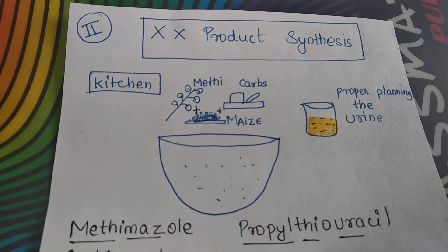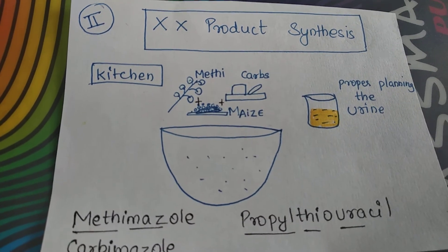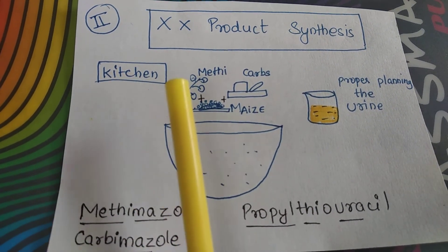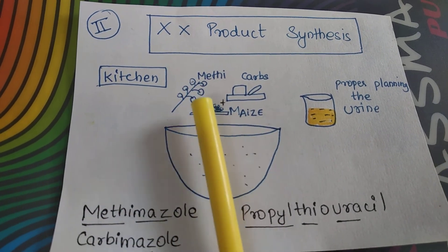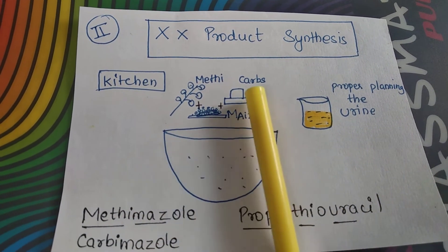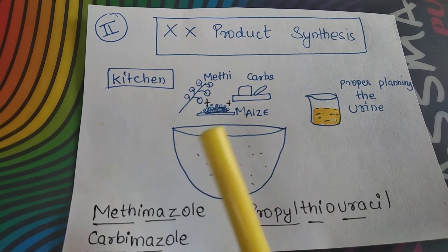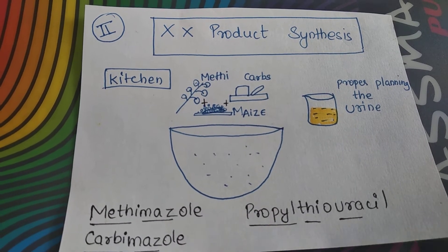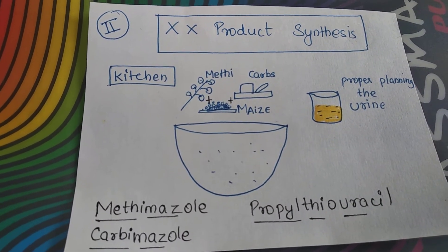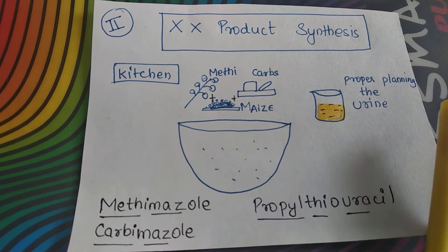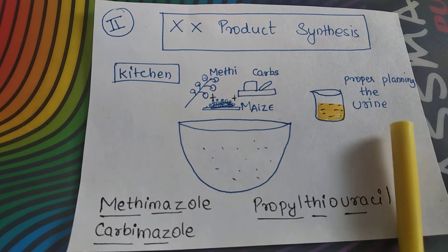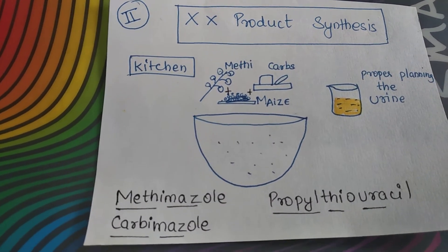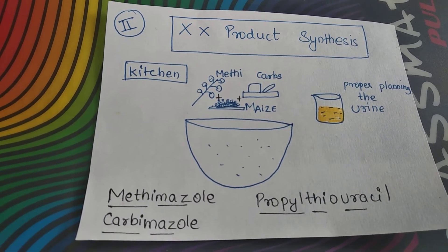The second stage is product synthesis, happening in the kitchen. To inhibit the synthesis of the hormone: a combination of methi and maize gives us the drug methimazole, and carbs plus maize gives us carbimazole. Alternatively, by proper planning we can add urine — 'propyl' represents propyl and 'urine' represents thiouracil, giving us propylthiouracil. These are the drugs which inhibit the synthesis of the hormone.